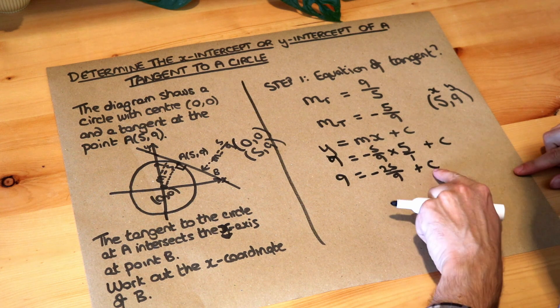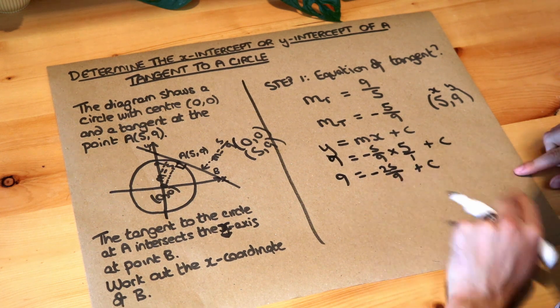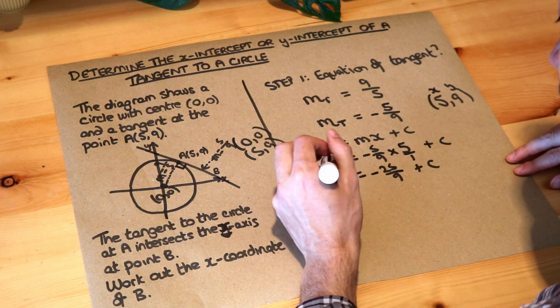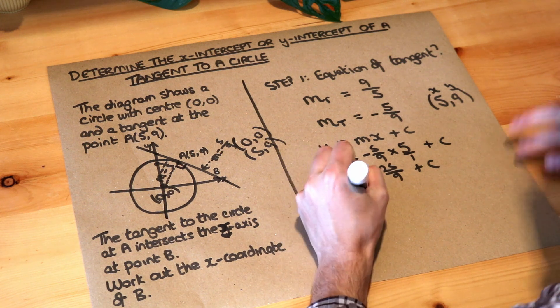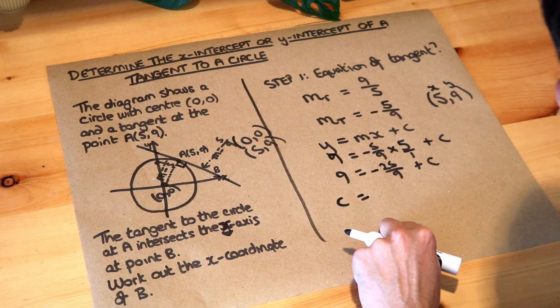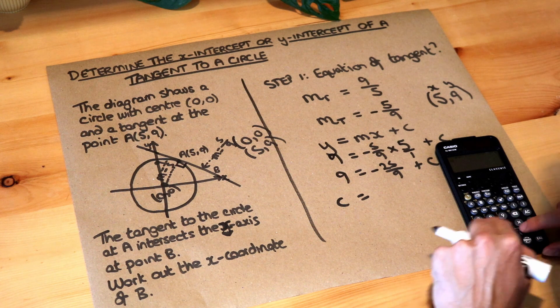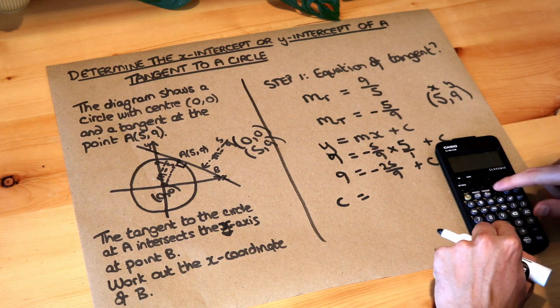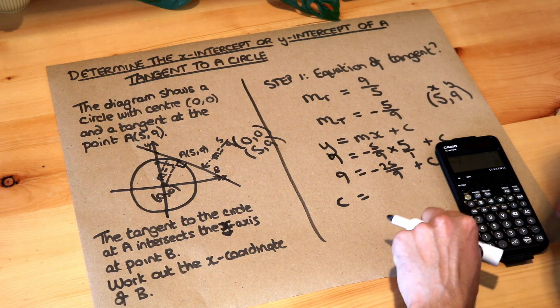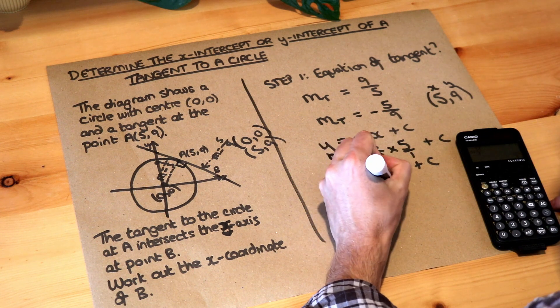And then we want c on its own, so we add 25 over 9 to both sides. And if we do that, I'm just on my calculator, going to do 9 plus 25 over 9. And that is 106 over 9.